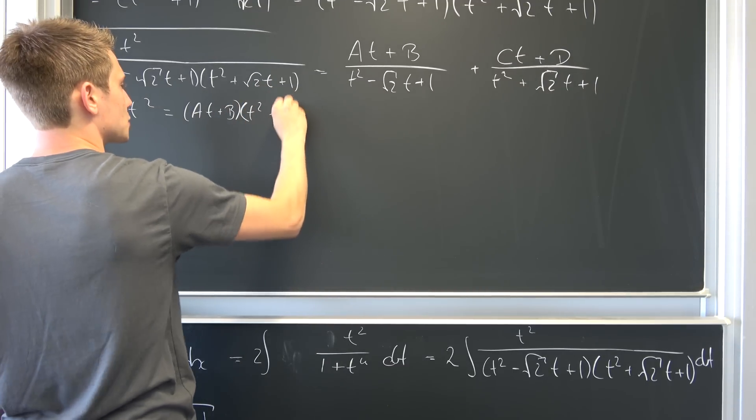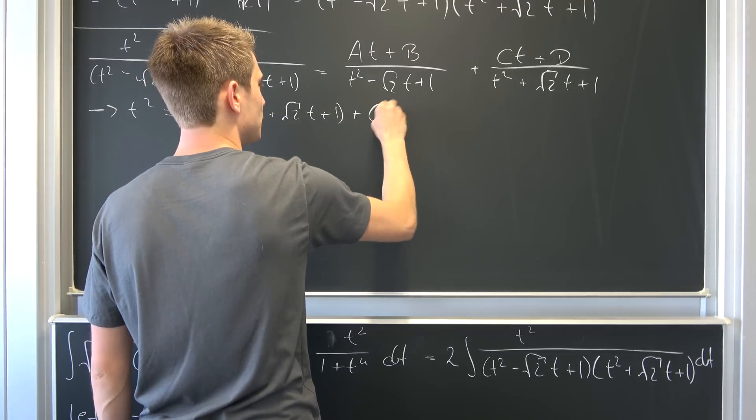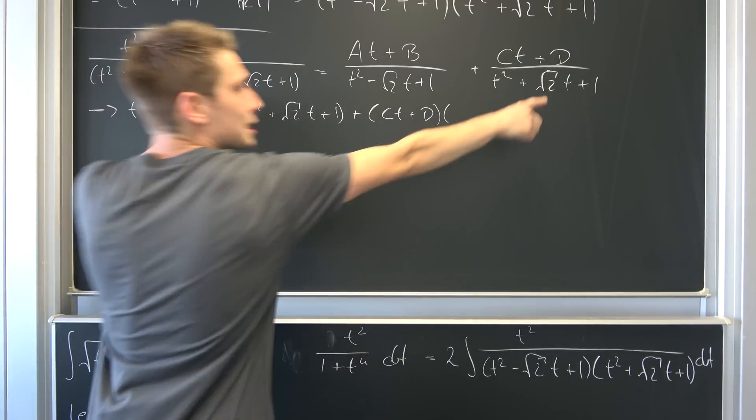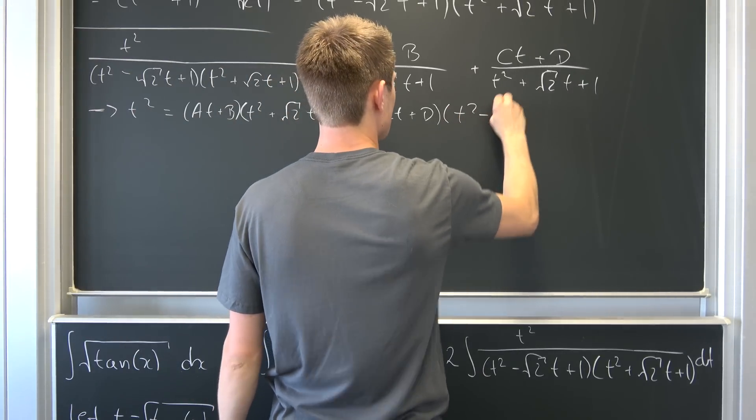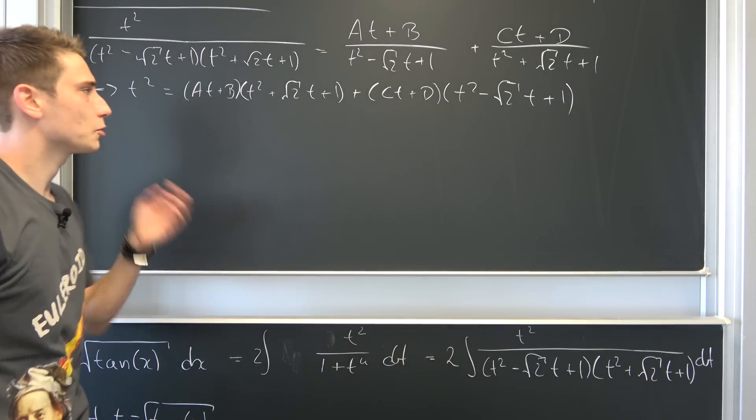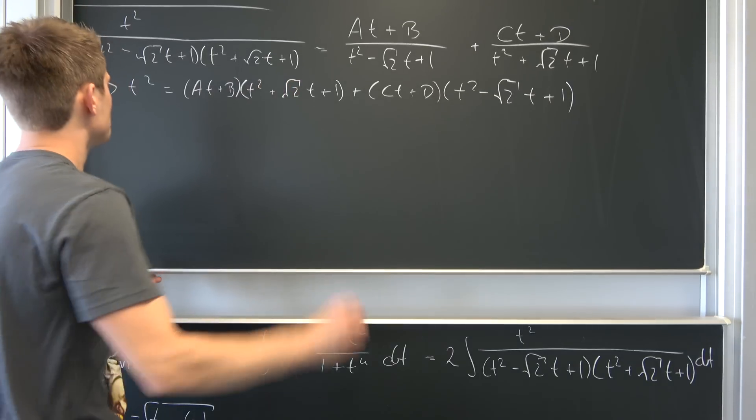So t squared plus square root of 2 times t plus 1 and then positive c times t plus d times. And this and that is going to cancel out. So we have to multiply it by this. So t squared negative square root of 2 times t plus 1. And this is going to be quite a mess, but let me write it out in a nice fashion.